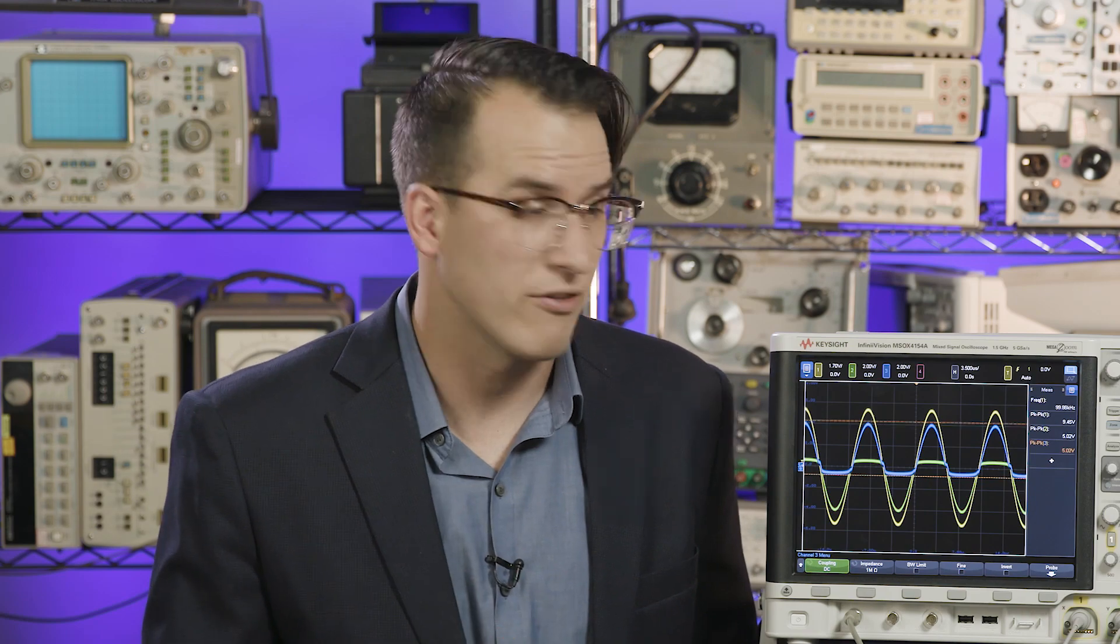What we really care about, though, is the difference between those two channels, channel 3 minus channel 2, because that's the voltage being applied to our load. You can do that with a math channel, but you lose a lot of accuracy, and you lose the channel use of your scope, and any mismatch between those passive probes that you're using will cause issues.